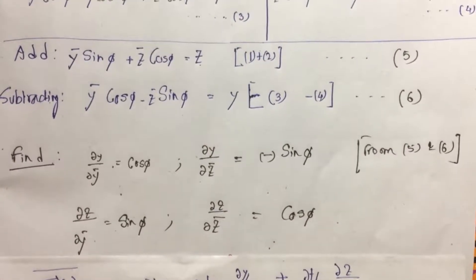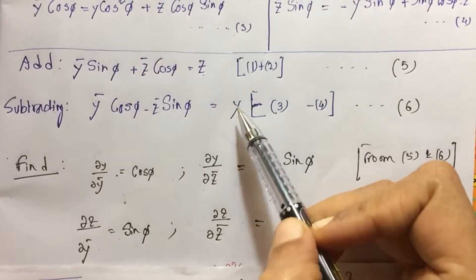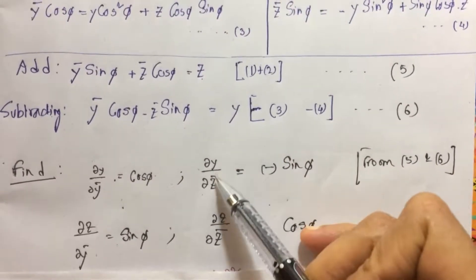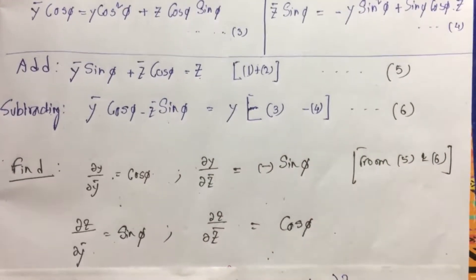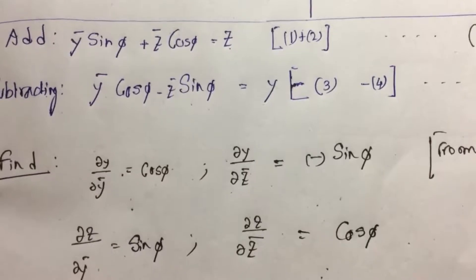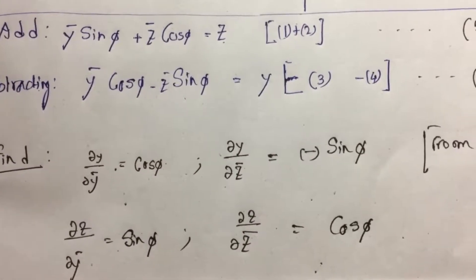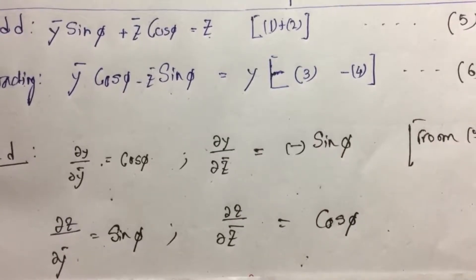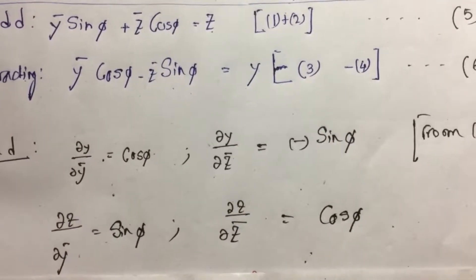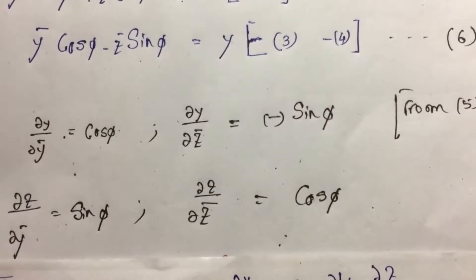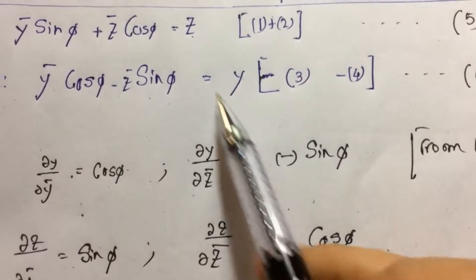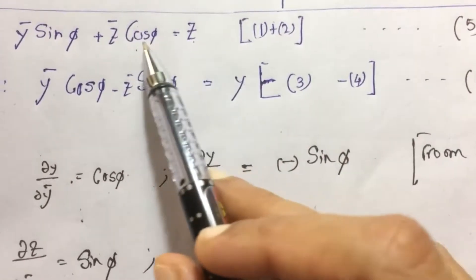Let us make some derivatives. If we make ∂y/∂y_bar we will get cos(φ) only. For ∂y/∂z_bar we get minus sin(φ) only. Similarly, if we make ∂z/∂y_bar we get sin(φ) only, because if we differentiate with respect to y_bar we are left with only sin(φ) since the cos(φ) term involves z_bar. Similarly, from the equation we will get ∂z/∂z_bar — we differentiate that term only and we get ∂z/∂z_bar equal to cos(φ).